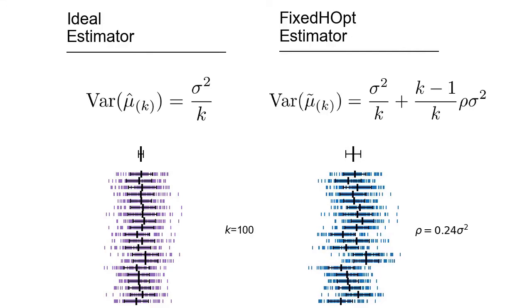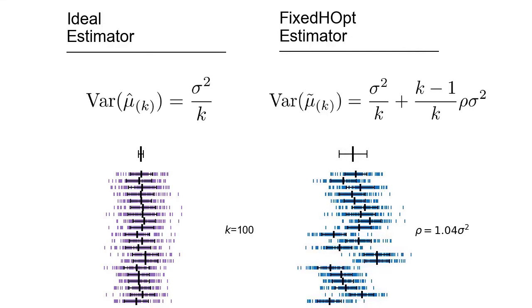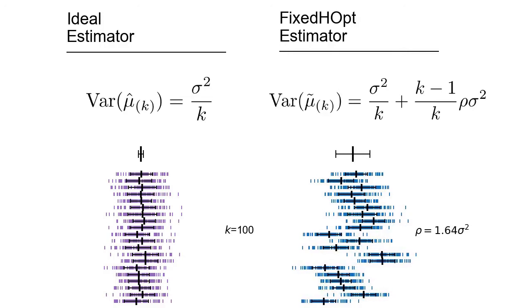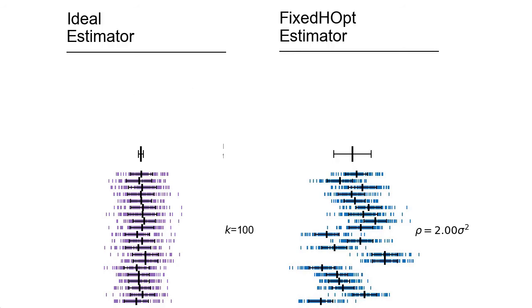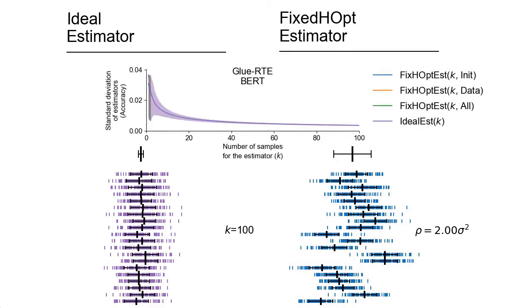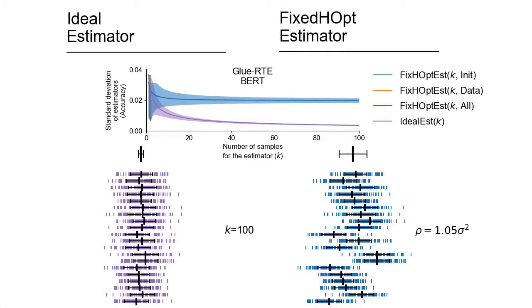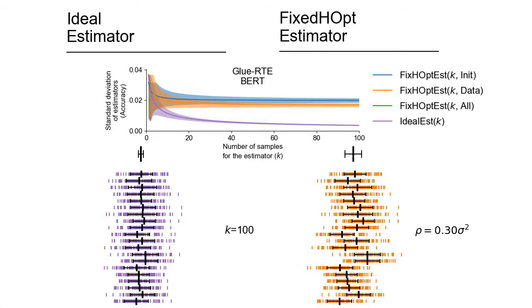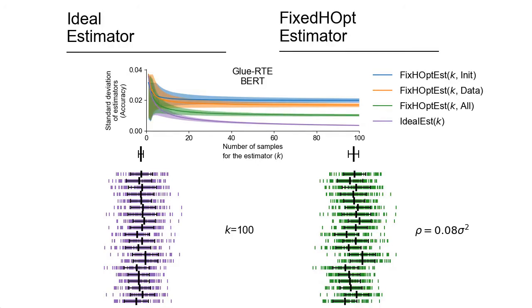Now, as we increase this correlation, the whiskers randomly drift apart, increasing the variance of the mean estimation. Let's take a look at correlation values in one of the tasks we investigated — BERT on GLUE-RTE. We plot the evolution of the standard deviation as a function of sample size k. First, randomizing the weights only: the correlation is 1.05 times the level of variance. Second, randomizing the data splits only: the correlation drops to 0.3 times the variance. Finally, randomizing everything except hyperparameter optimization: the correlation drops to 0.08 times the variance. Without a doubt, ignoring hyperparameter optimization is damaging for the quality of the mean estimator. At the very least, we should randomize all sources of variation to attenuate this effect by decreasing the correlation.